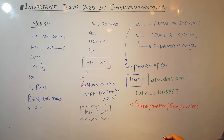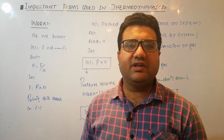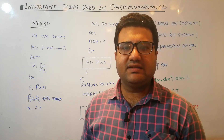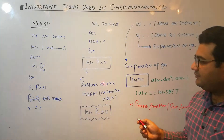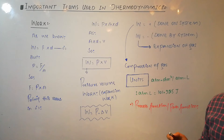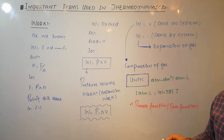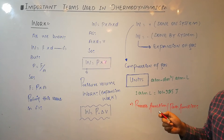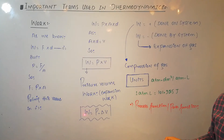This type of work is called pressure-volume work or expansion work. Among the many types of work — mechanical, electrical — it is pressure-volume work that is relevant in thermodynamics. In thermodynamics, we mostly discuss change in volume, so the formula of work becomes W equals P times delta V.